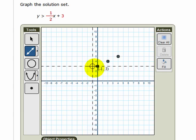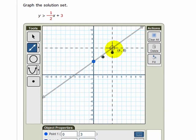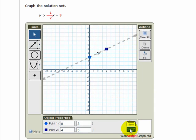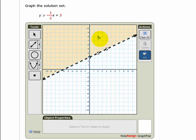Then we draw in our boundary line, connecting those points, and change it to a dashed line, and fill on the appropriate side.